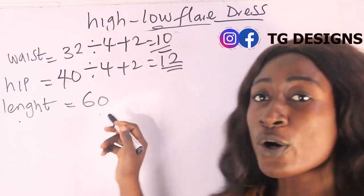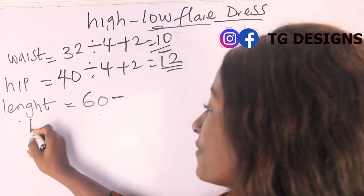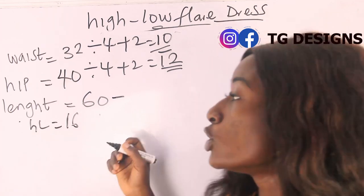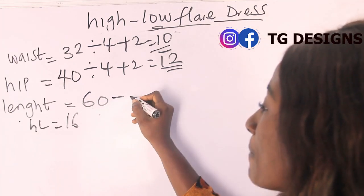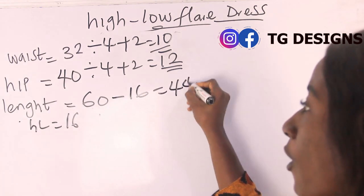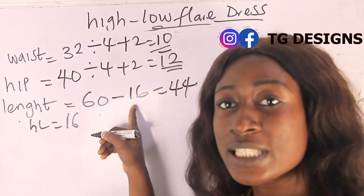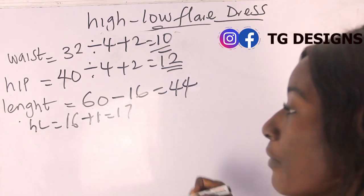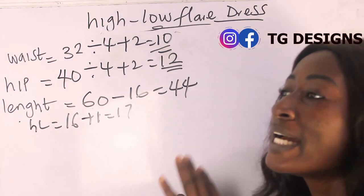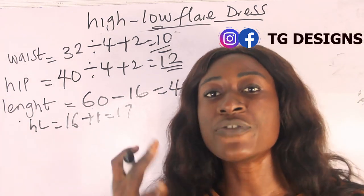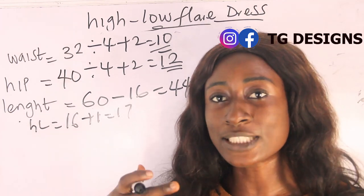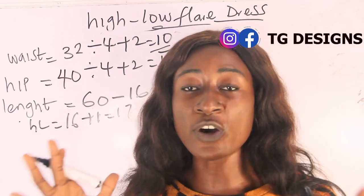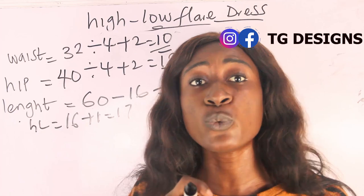Let's calculate our length. Our total length is 60 inches minus our half length of 16 inches, giving us 44 inches. Our half length is 16 inches plus one inch sewing allowance, which gives 17 inches. You are also going to have a band — the band attaches the upper part of your dress to your flay part.